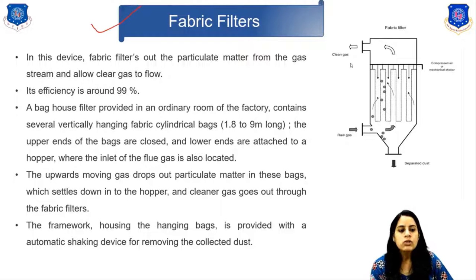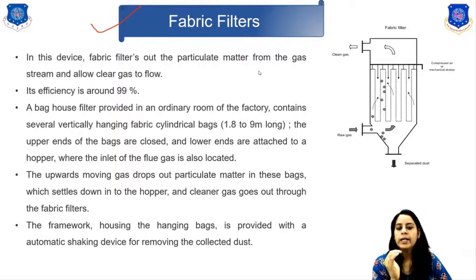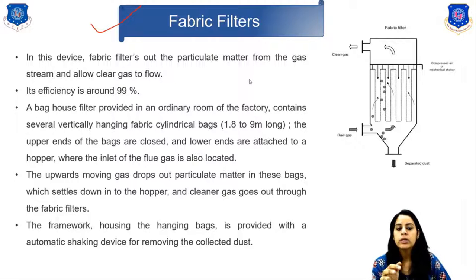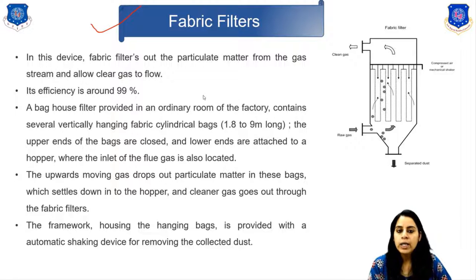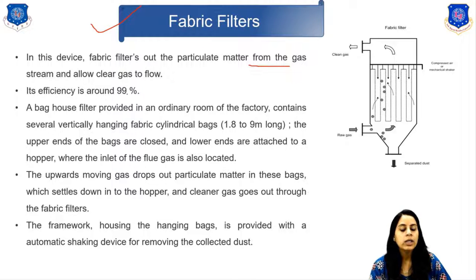The next device is the fabric filter. In this system, flue gases pass through a woven or felted fabric which filters out particulate matter and allows the gas to pass through. Small particles are retained on the fabric through interception and electrostatic attraction, and later when a dust mat forms, the fabric collects particles more efficiently, removing particles up to 1 micrometer. Raw gas enters and clean gas exits, with filters provided in between.